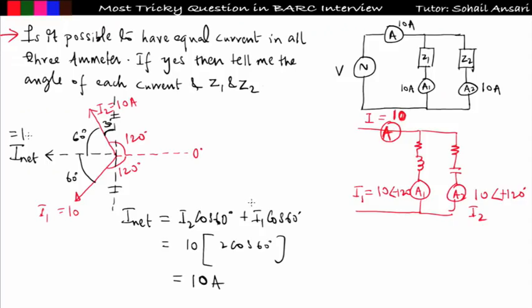Hi guys, welcome to Getmatic. In the previous Q&A session, I solved one question that has been asked in a BARC interview from network theory, and I explained all the answers according to what the interviewer said — that I1 is equal to 10 at angle minus 120 and I2 is equal to 10 at an angle of plus 120.